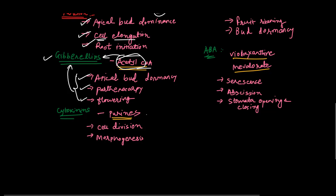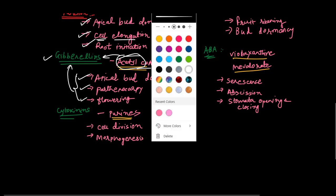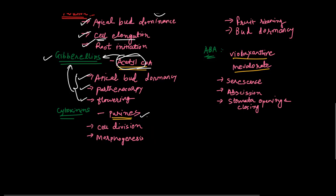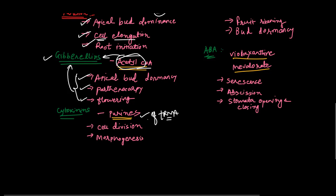The third hormone is cytokinin. Cytokinins are synthesized from purines — specifically the purines of tRNA. The name 'cyto' means cell, and cytokinins help in cell division. They play important roles in cell division and morphogenesis.